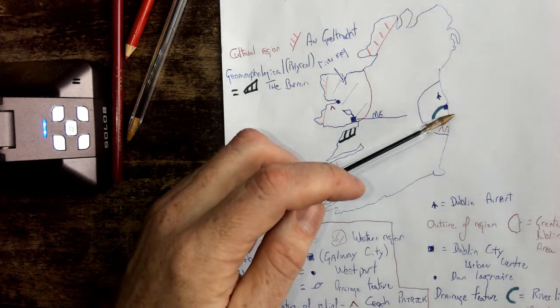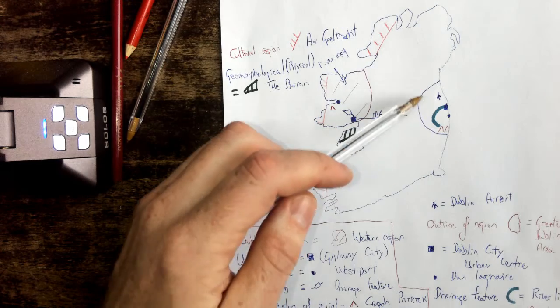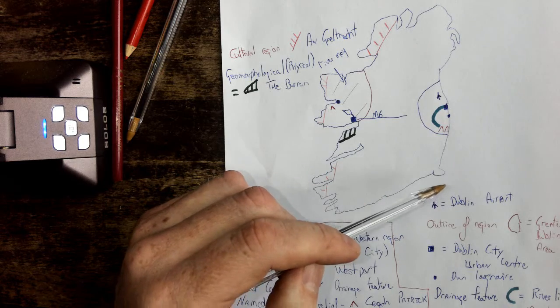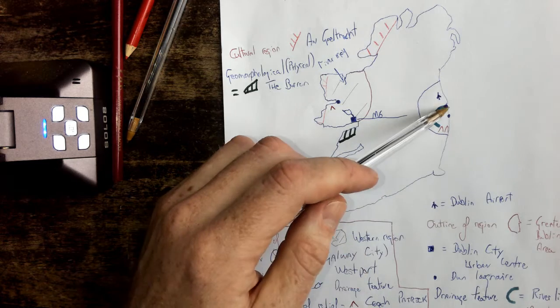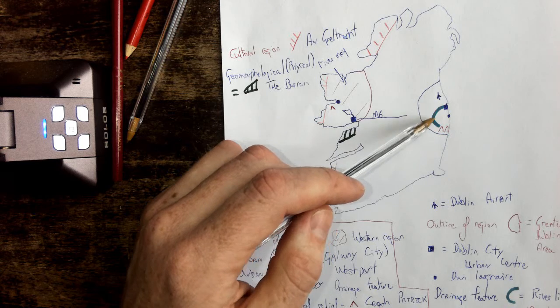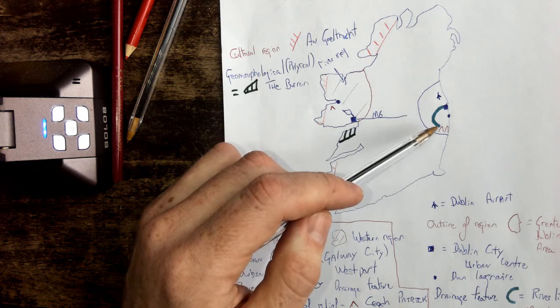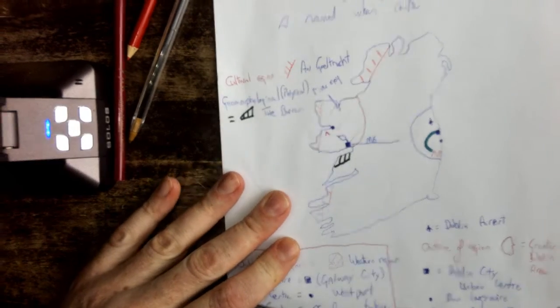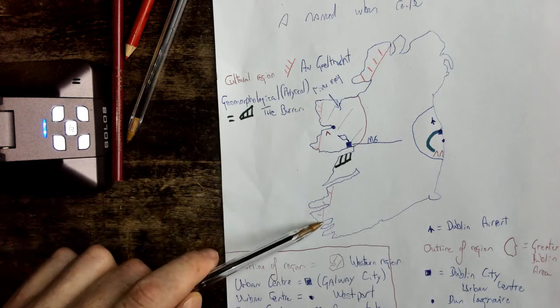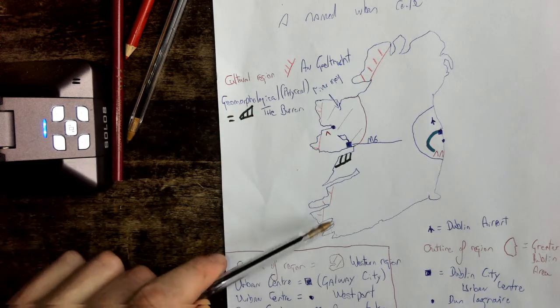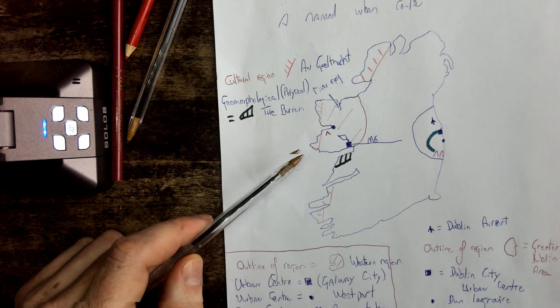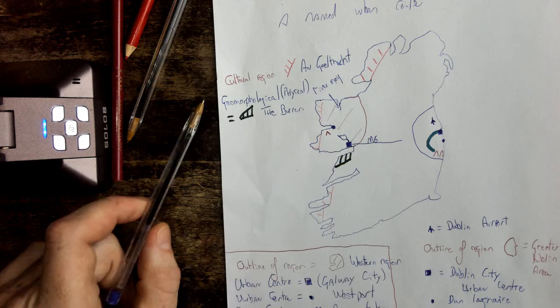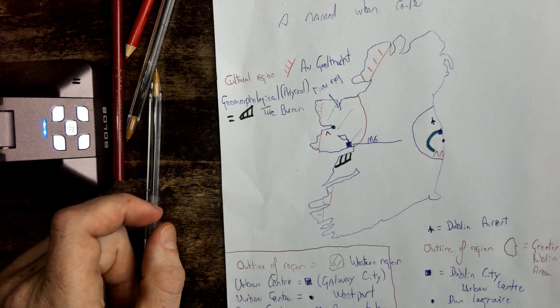Then for the Dublin region we have the outline of the region. We have Dublin City Centre as the urban centre, Dunleary is our second urban centre, the Wicklow Mountains as our relief feature and River Liffey as our second relief feature or drainage feature. Then possibly you could be asked to name a cultural region, that's the Gaeltacht on the edges of Ireland's western counties, and a geomorphological feature or physical feature which you could include as the Burren. Okay, I hope that helps.